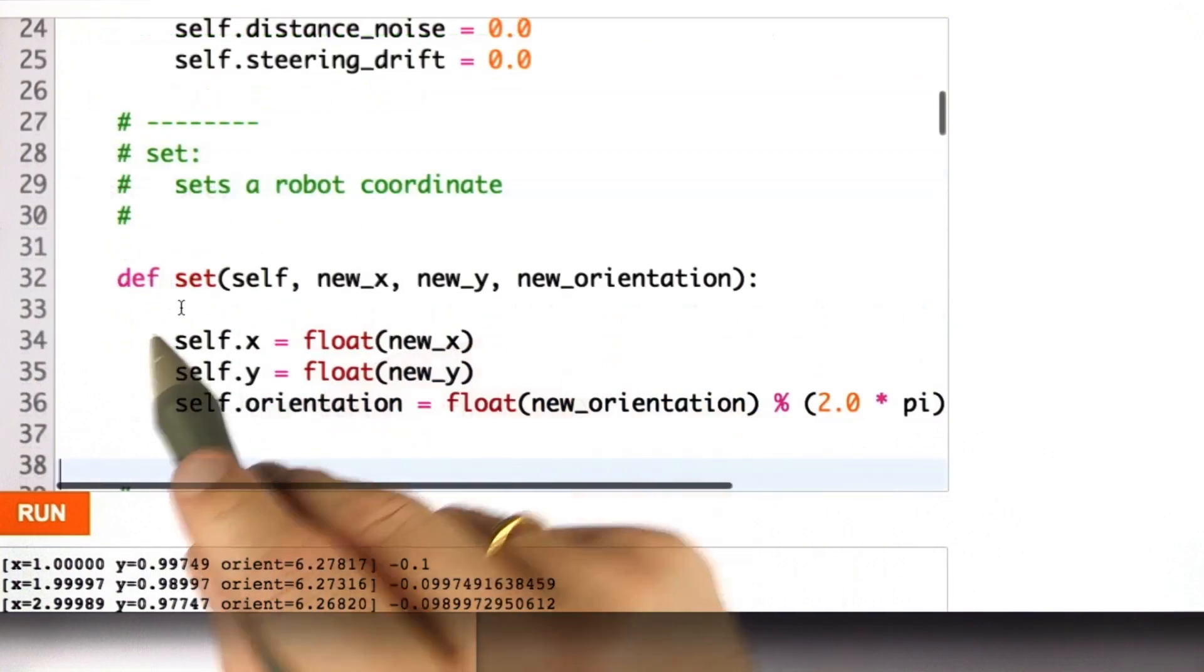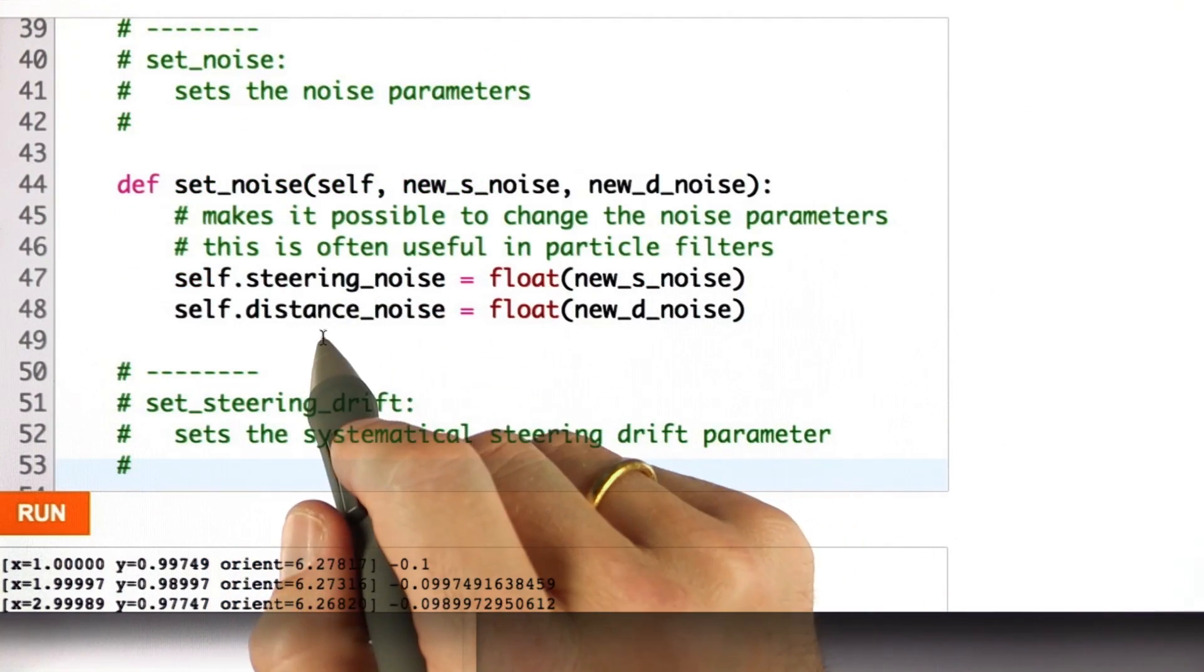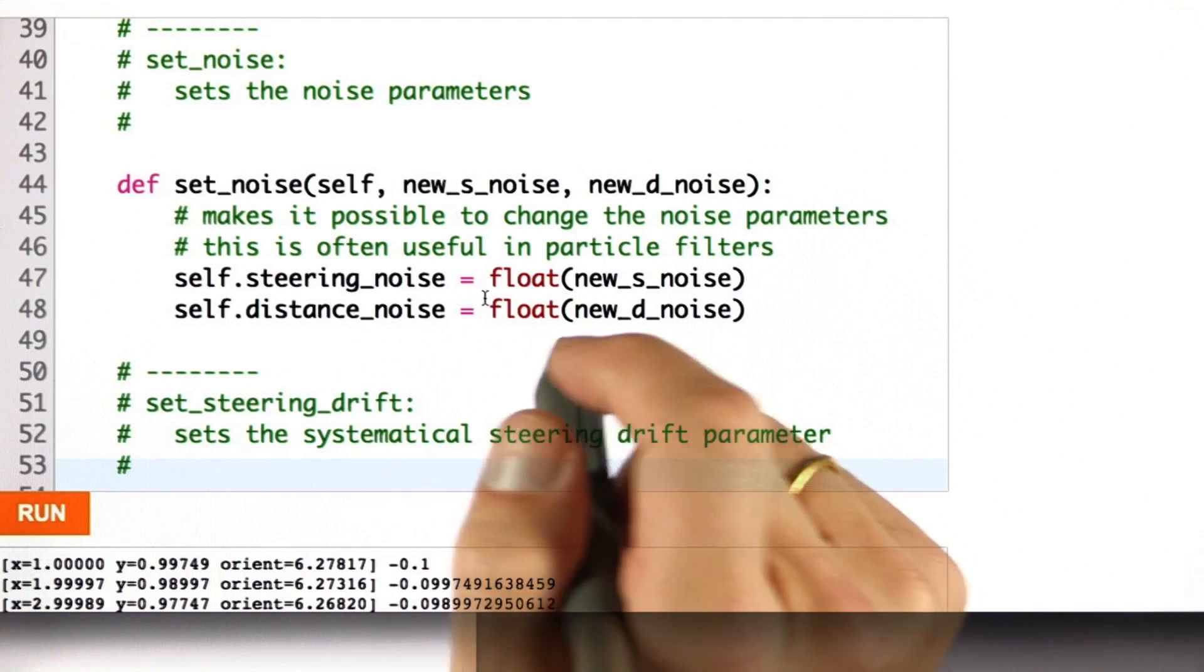It has an init. You can set the position using the function set, as before. There's steering noise and distance noise. You're familiar with this.